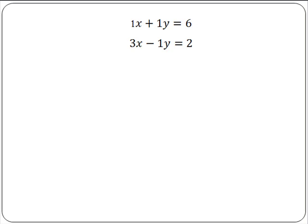For example, in the first one, x could be 4 and y could be 2, which would give us 4 plus 2 equals 6. Or x could be 3 and y could be 3, which would give us 3 plus 3 equals 6. Similarly, for the second equation, many values for x and y will satisfy this equation. x equals 5 and y equals 13 will give us 3 times 5 is 15 minus 13 equals 2. Or x is 2 and y is 4 will give us 3 times 2 is 6 minus 4 equals 2.